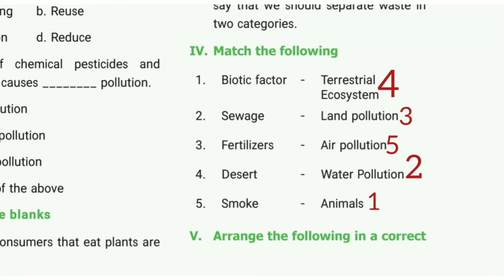Match the following. 1st one: biotic factor. The answer is animals. 2nd one: sea and lakes. The answer is water ecosystem. 3rd one: fertilizer. The answer is land pollution.